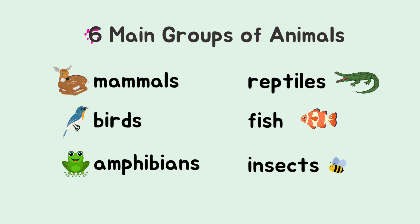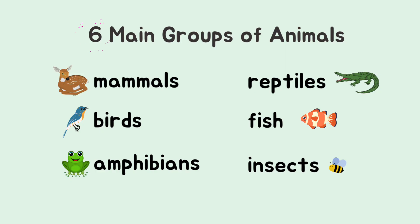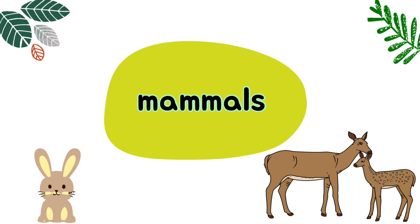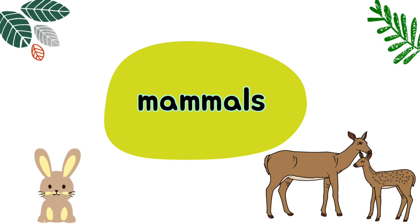The six main groups of animals are mammals, birds, amphibians, reptiles, fish, and insects. Now, let's learn about mammals.